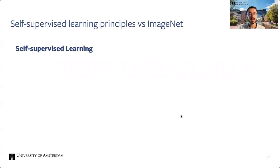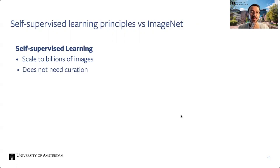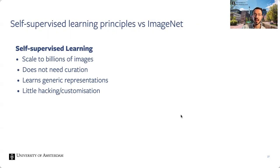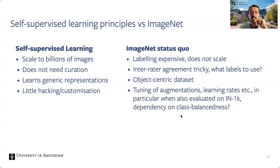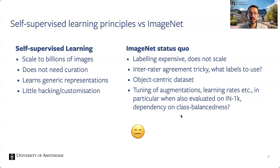Self-supervised learning's promise is that we can scale to billions of images because we don't need labels or curation — it can learn generic representations. However, the status quo was that everyone uses ImageNet even though labeling is expensive, it doesn't scale, inter-rater agreement is tricky, and it's an object-centric dataset. People have tuned augmentations, learning rates, and weight decay schedules all evaluated on the same ImageNet dataset — which is strange if you're supposed to be doing label-free learning.